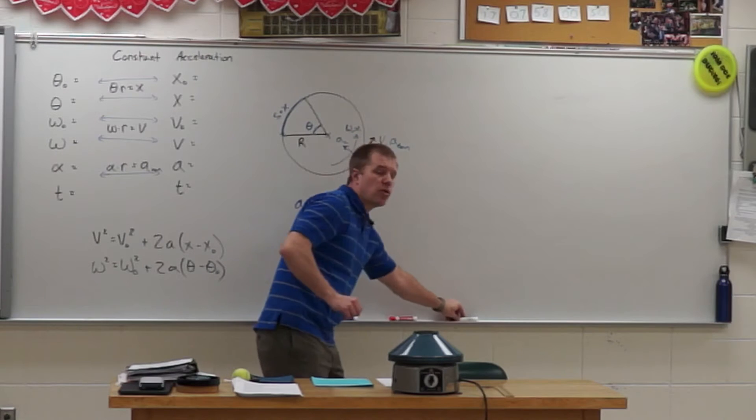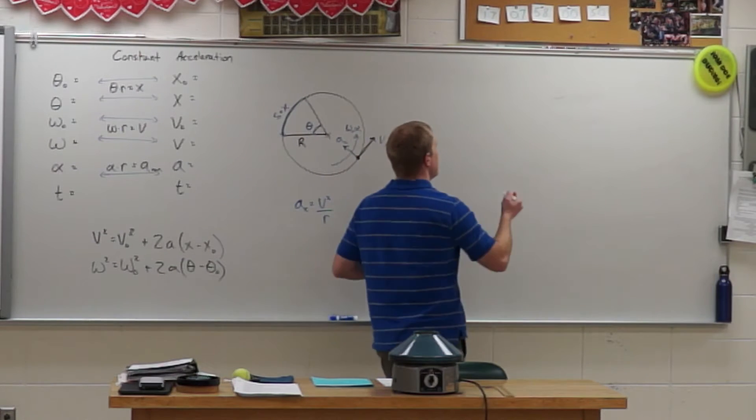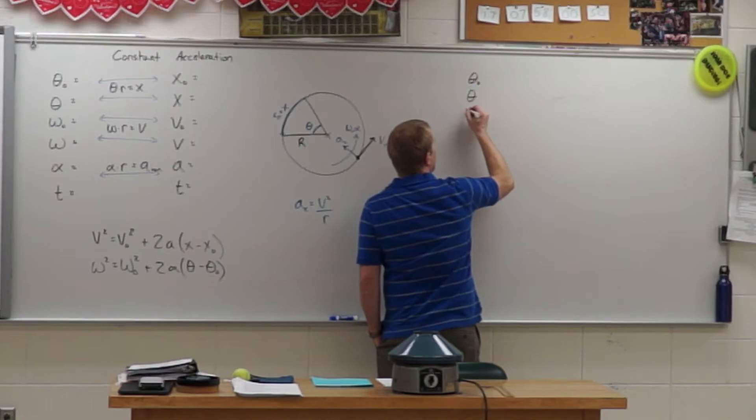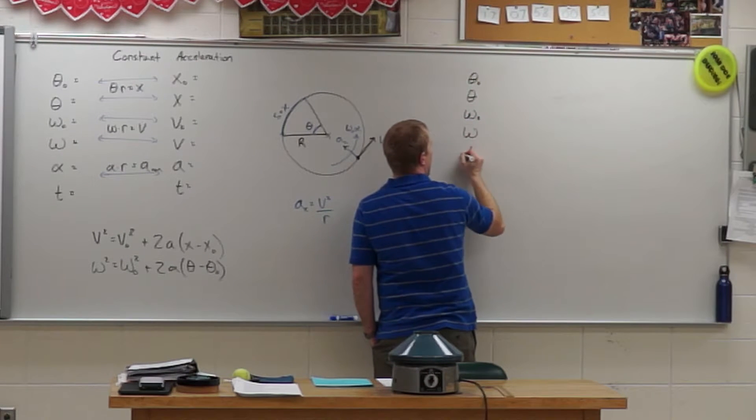Alright, so it's going to consider a constant angular acceleration. So that means I'm going to list my variables. So I have theta naught, theta, omega naught, omega, alpha, and t.